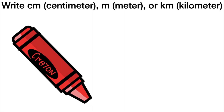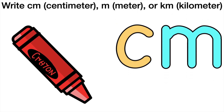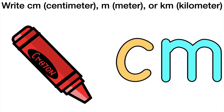Let's have the first one — a crayon. Which of the following is the best unit when we measure the length of the crayon? Very good. We're going to use centimeter, because a crayon is just a short object.